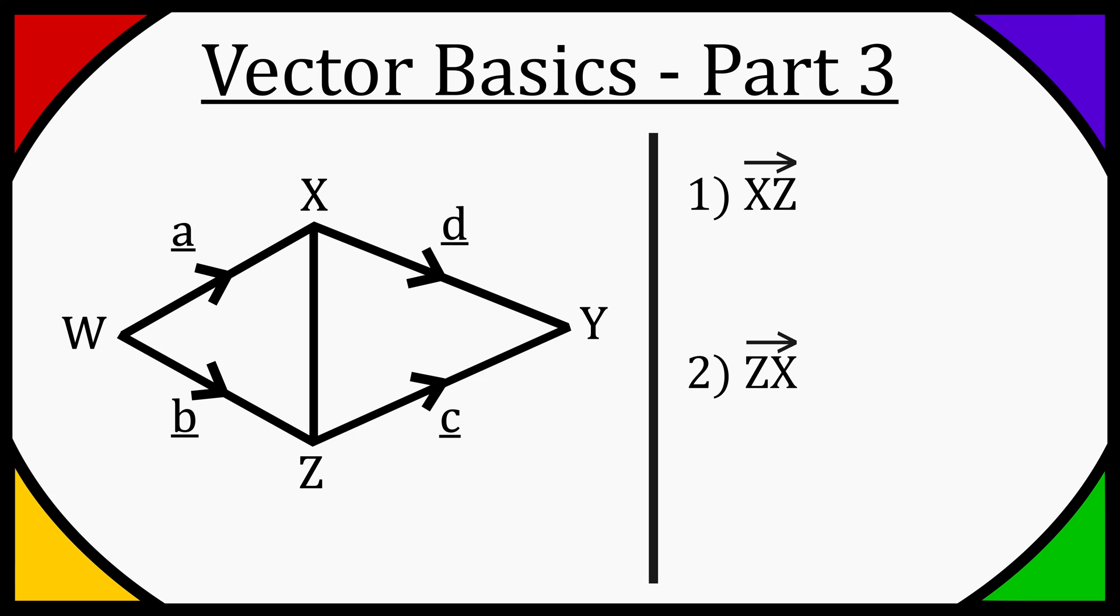So in part 1 we looked at basic vectors, these are just positive vectors and I explained how they work. In part 2 we worked with negative vectors, so what it means to go the opposite way of a vector. And then in part 3, this video, we're going to be using a combination of positive and negative vectors.